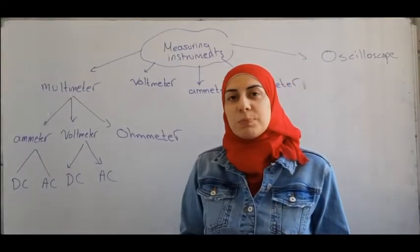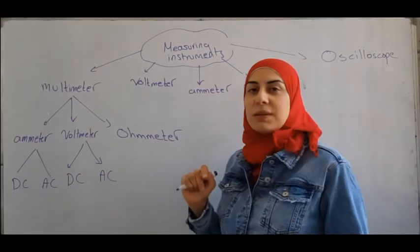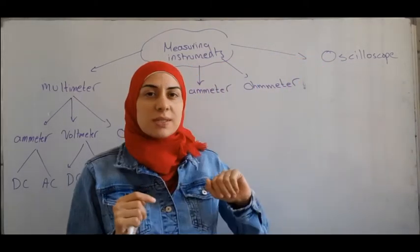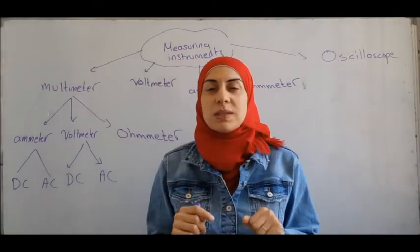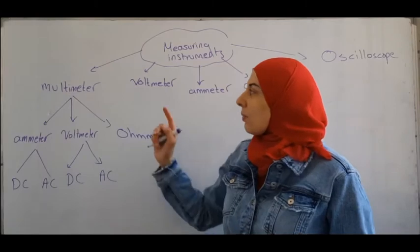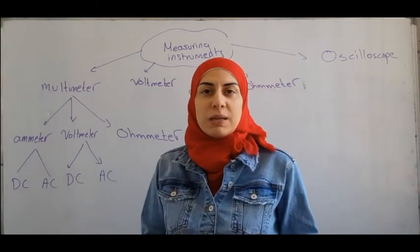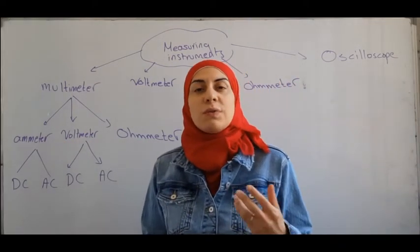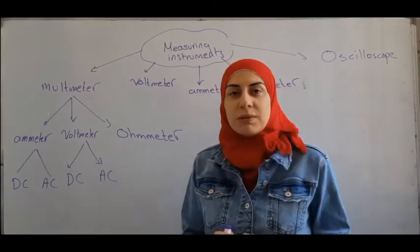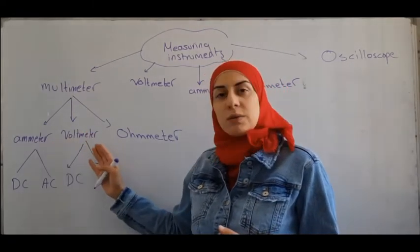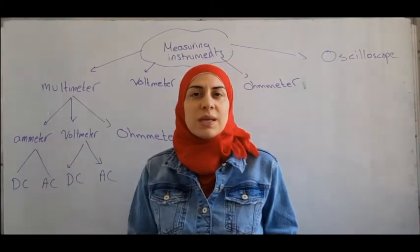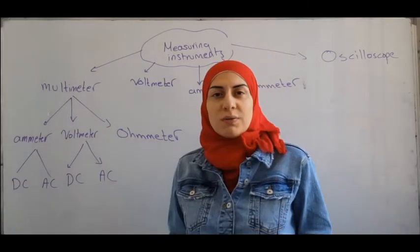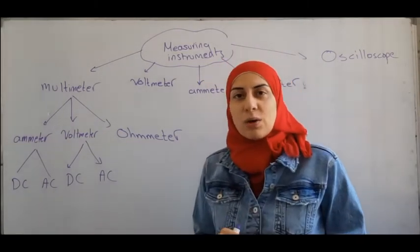Here is a concept map about measuring instruments. We have the voltmeter used to measure voltage, the ammeter to measure current, and the ohmmeter to measure resistance directly. We also have the oscilloscope used to visualize voltage, and the multimeter, which can function as an ammeter, voltmeter, or ohmmeter. If asked about the mode of a multimeter: if it measures current it functions as an ammeter, if voltage then a voltmeter, and if resistance then an ohmmeter.